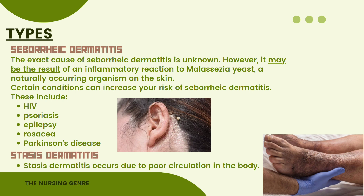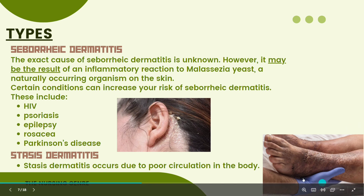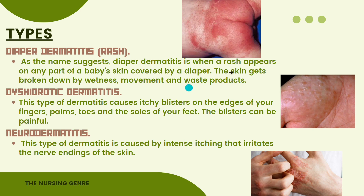Next, stasis dermatitis occurs due to poor circulation in the body. Diaper dermatitis, as the name suggests, is when a rash appears on any part of the baby's skin covered by a diaper. The skin gets broken down by wetness, movement, and waste products.